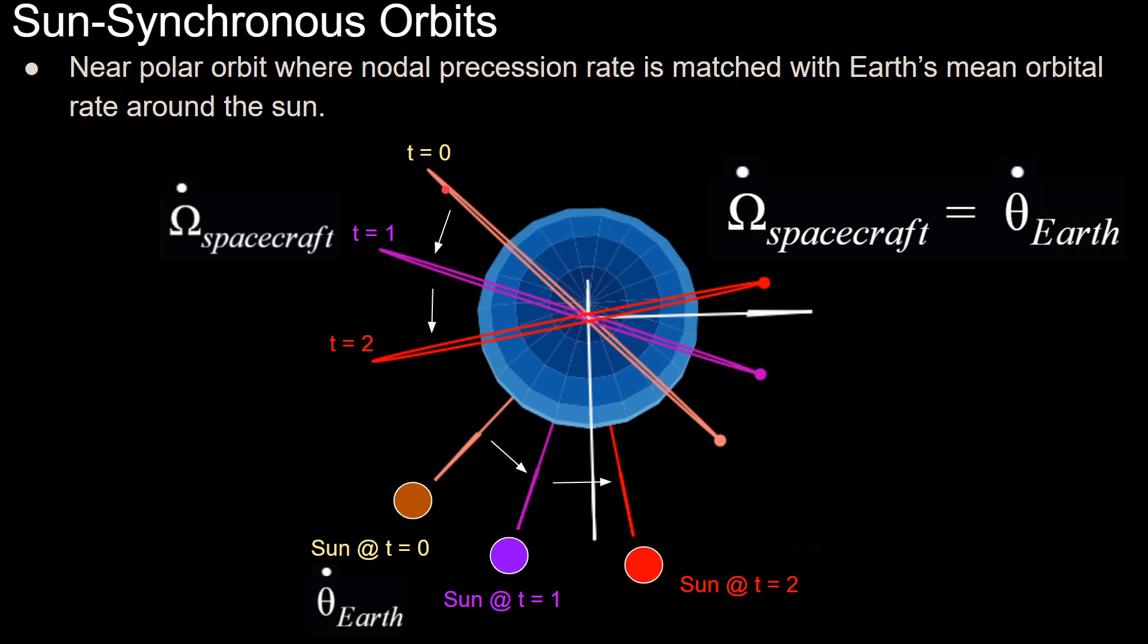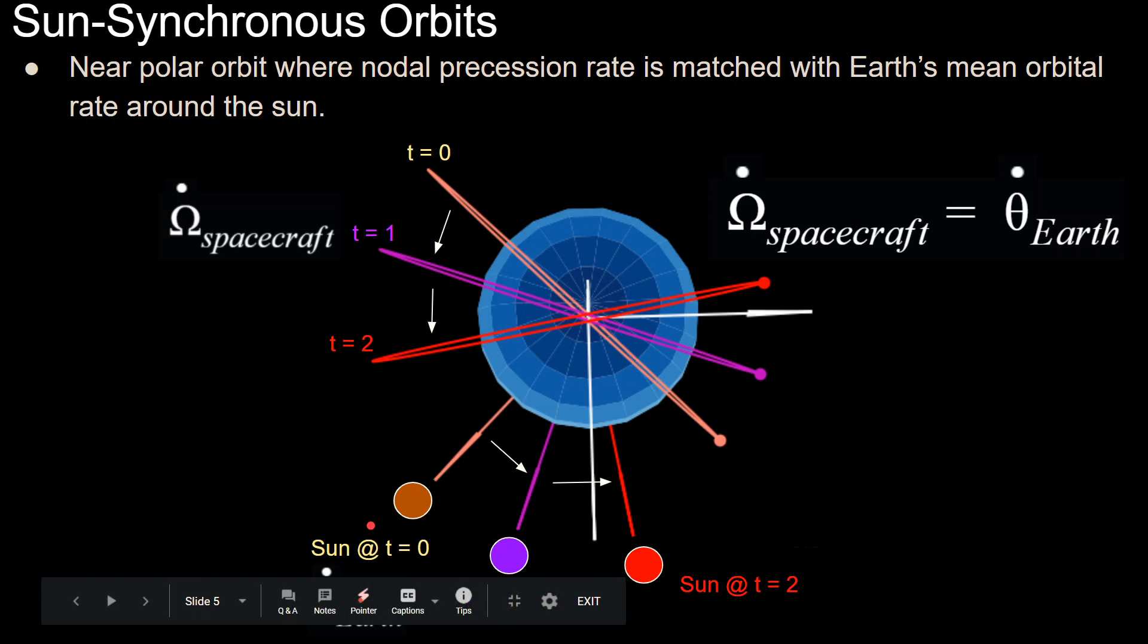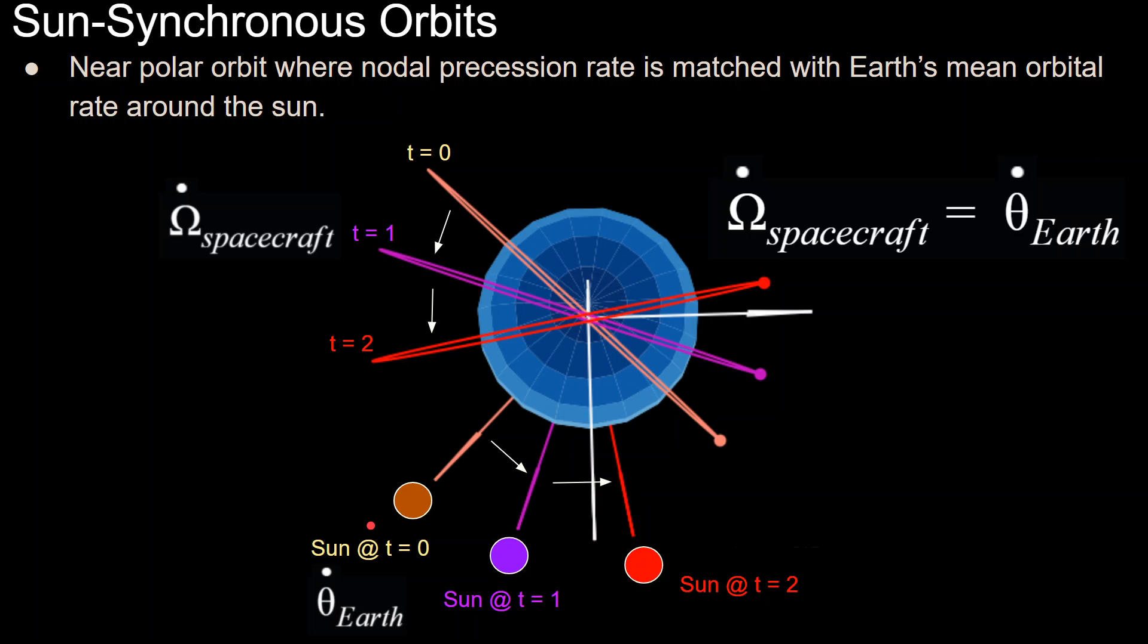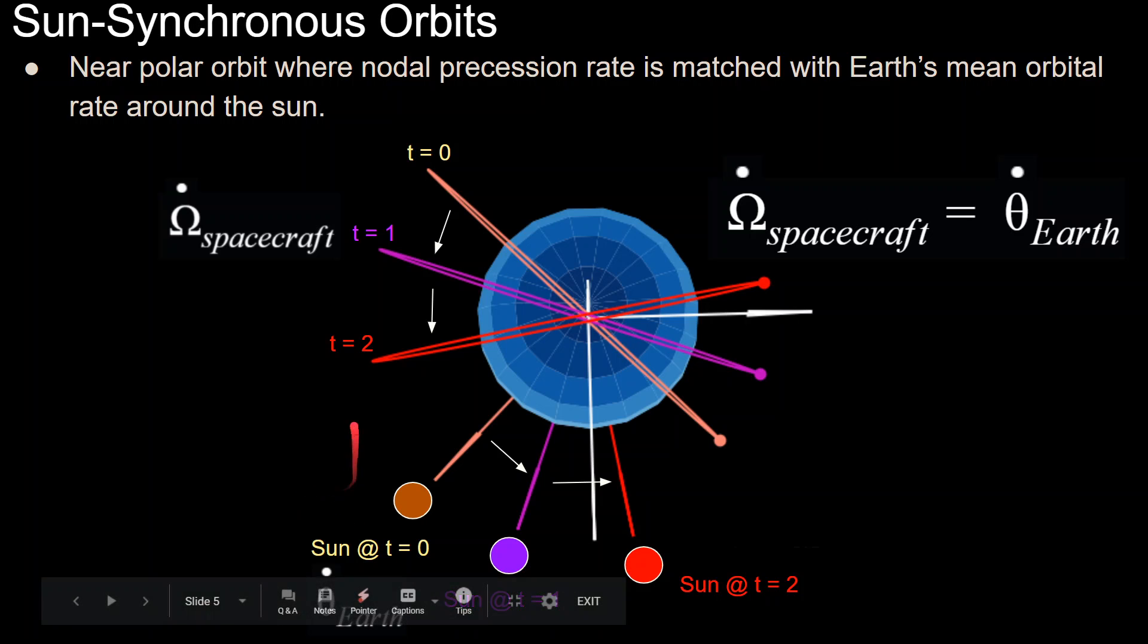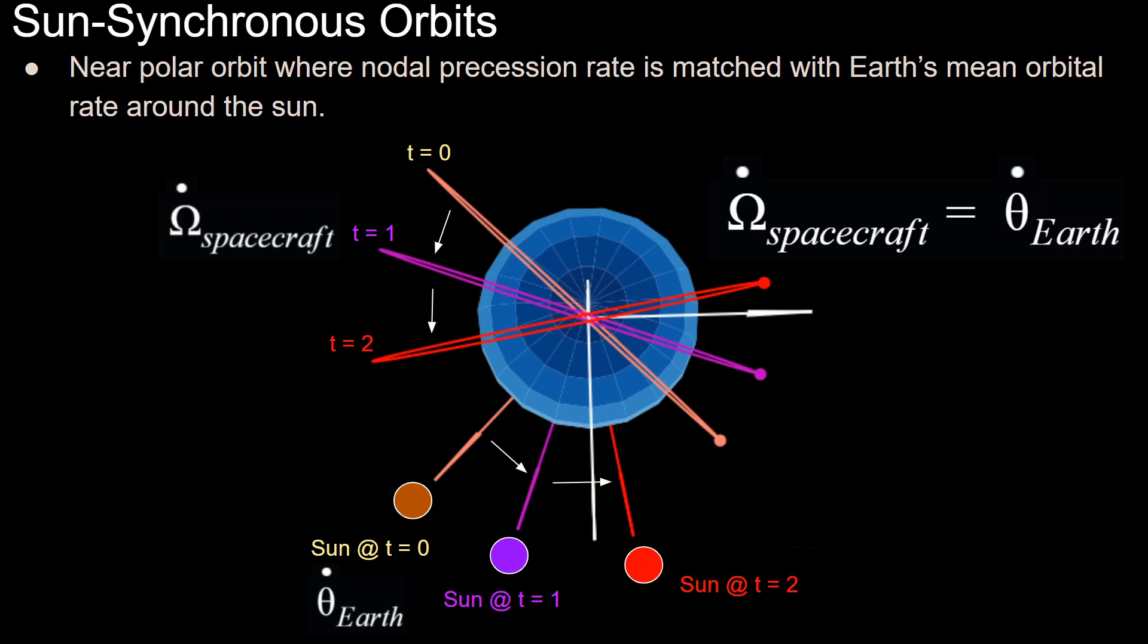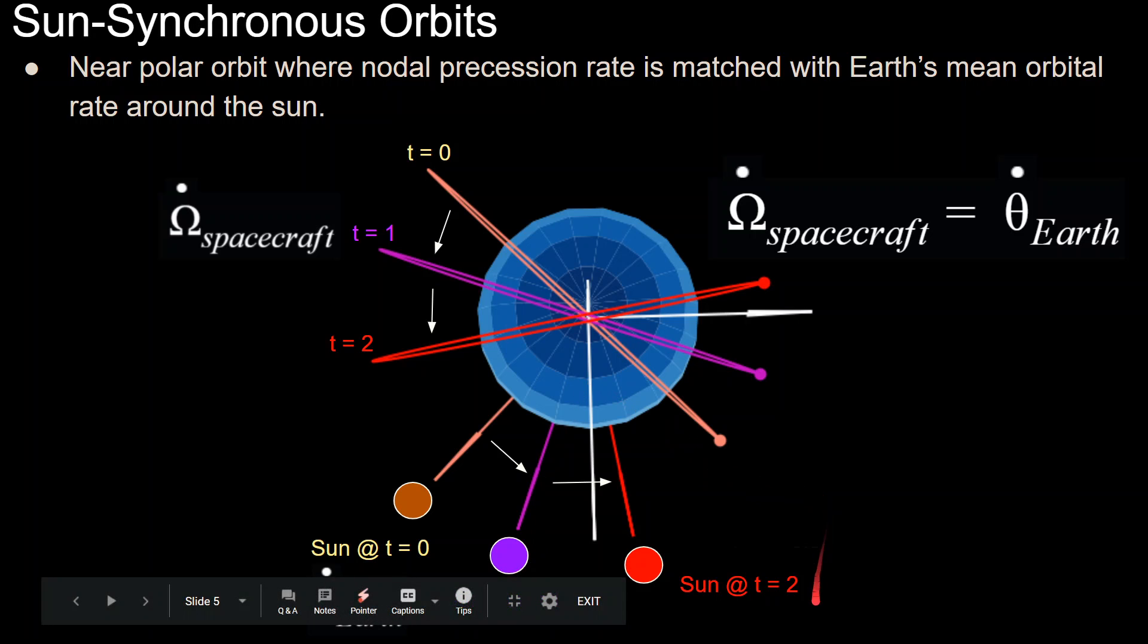At time equals zero, we have this orange orbital plane where the sun is in that direction, with the vector normal to that plane in the same direction as the sun vector with respect to the Earth. At time equals one, this plane has rotated due to the perturbation of J2, but also the sun has moved because the Earth is going around the sun. These angles are still equal, and the same thing at time equals two.